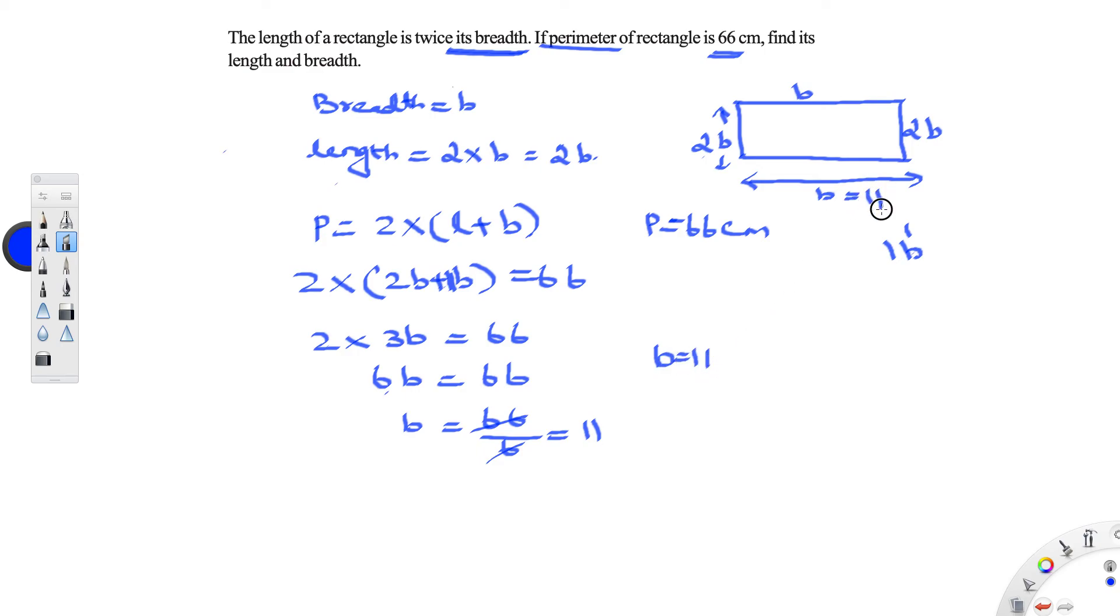Once you find the breadth as 11, length is 2 into b. So it is 2 into 11 which is equal to 22 cm. So length is equal to 22 cm. Breadth is equal to 11 cm.